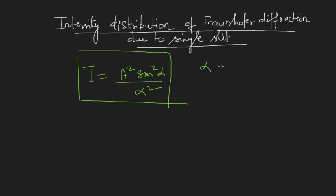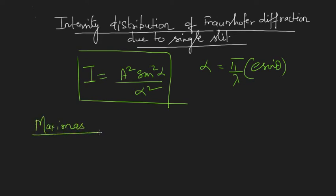Here, α written in terms of path difference is (π/λ)·e·sinθ. Now we have to understand the intensity distribution — where do we get the maxima and where do we get the minima. Let us start with maxima: for what values of α do I get maximum intensity from the expression for intensity?